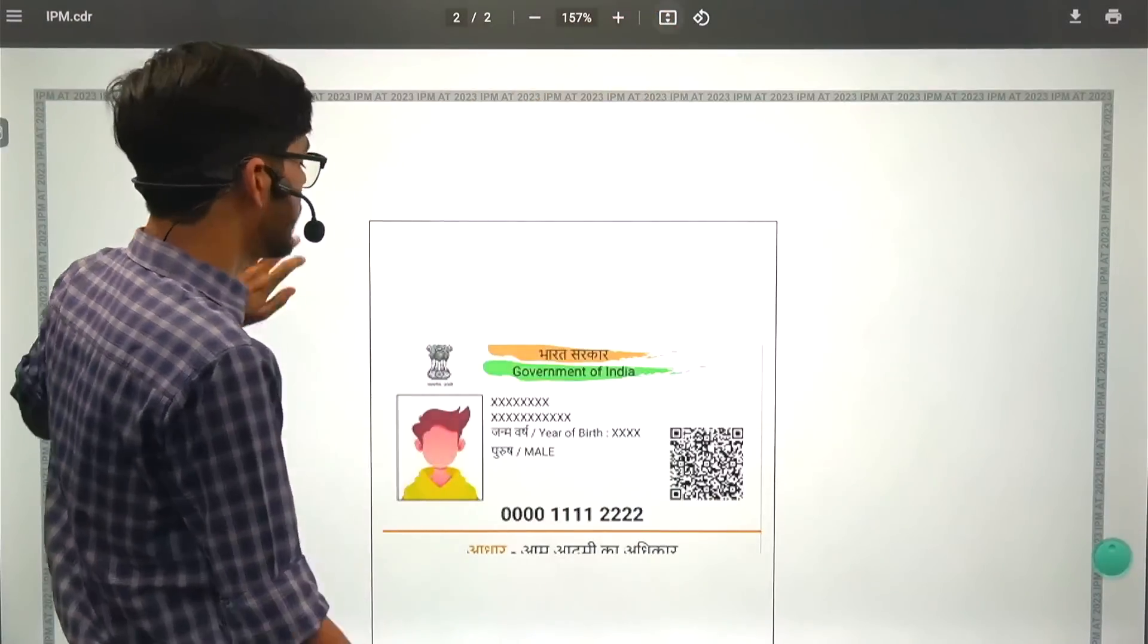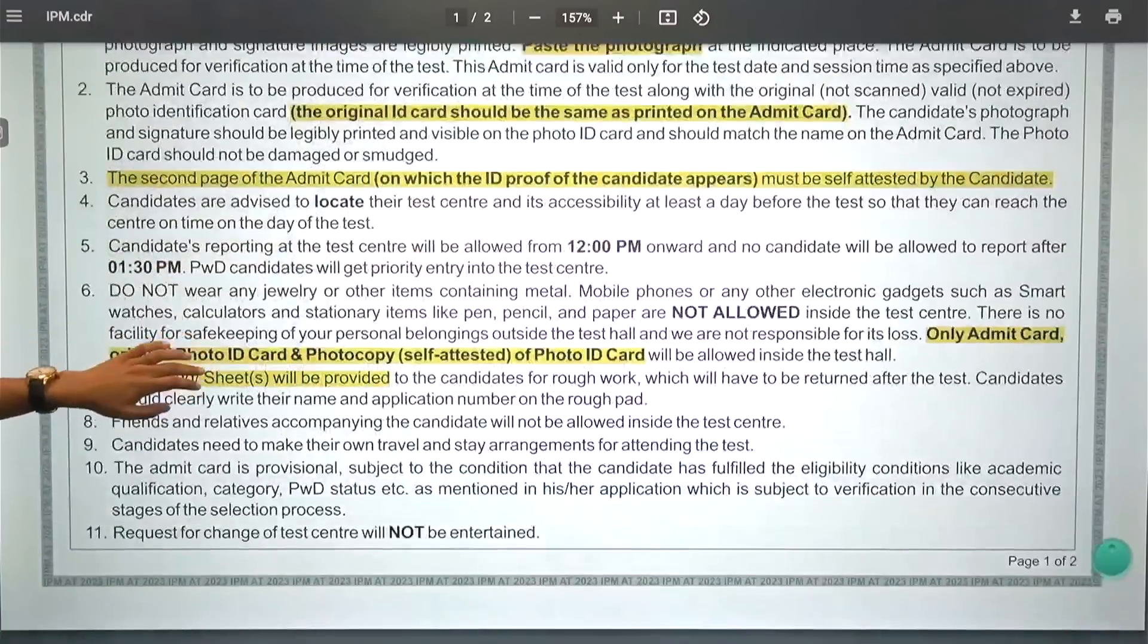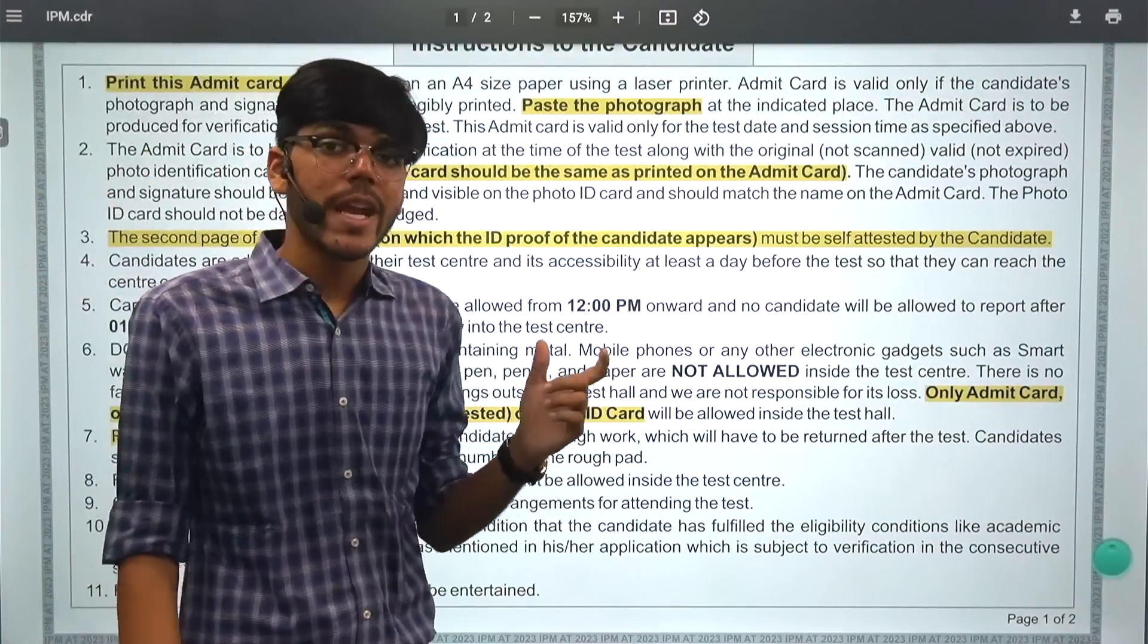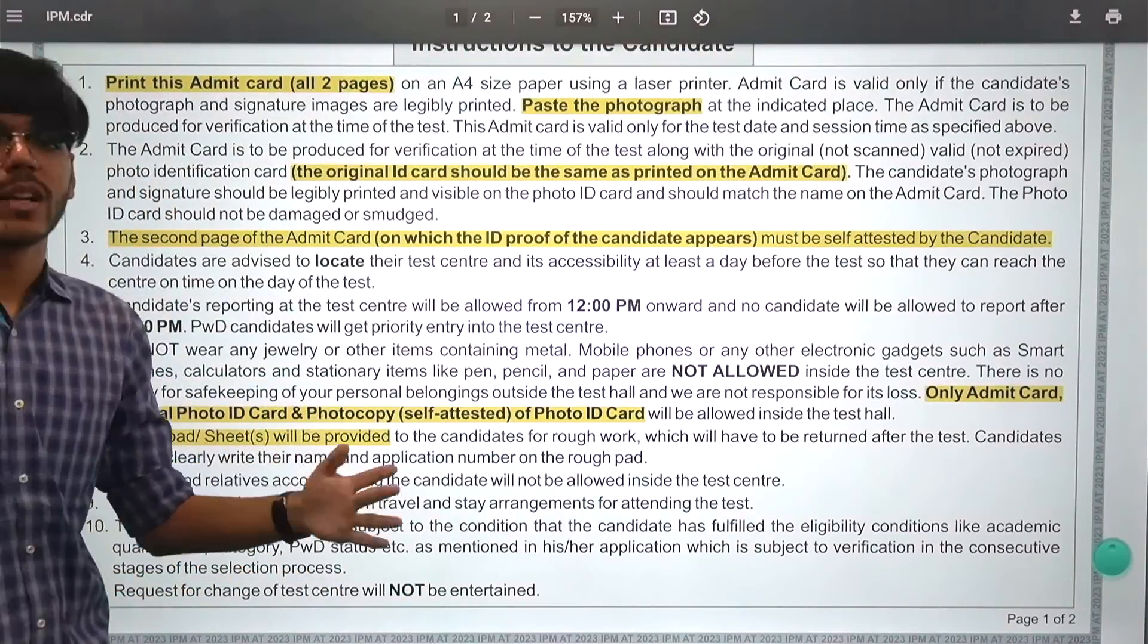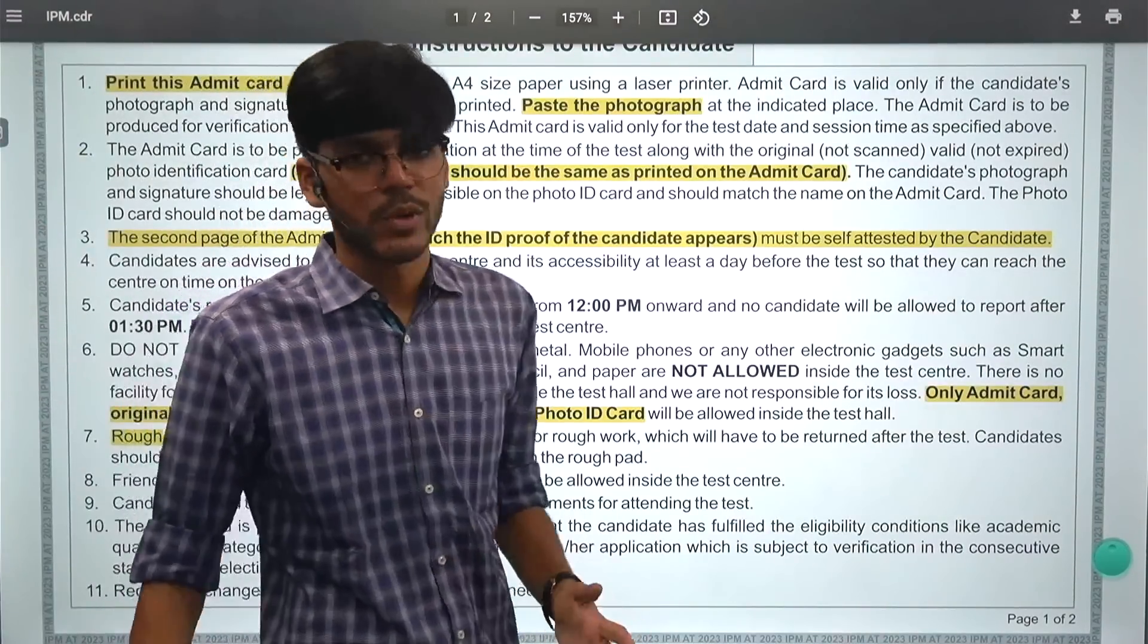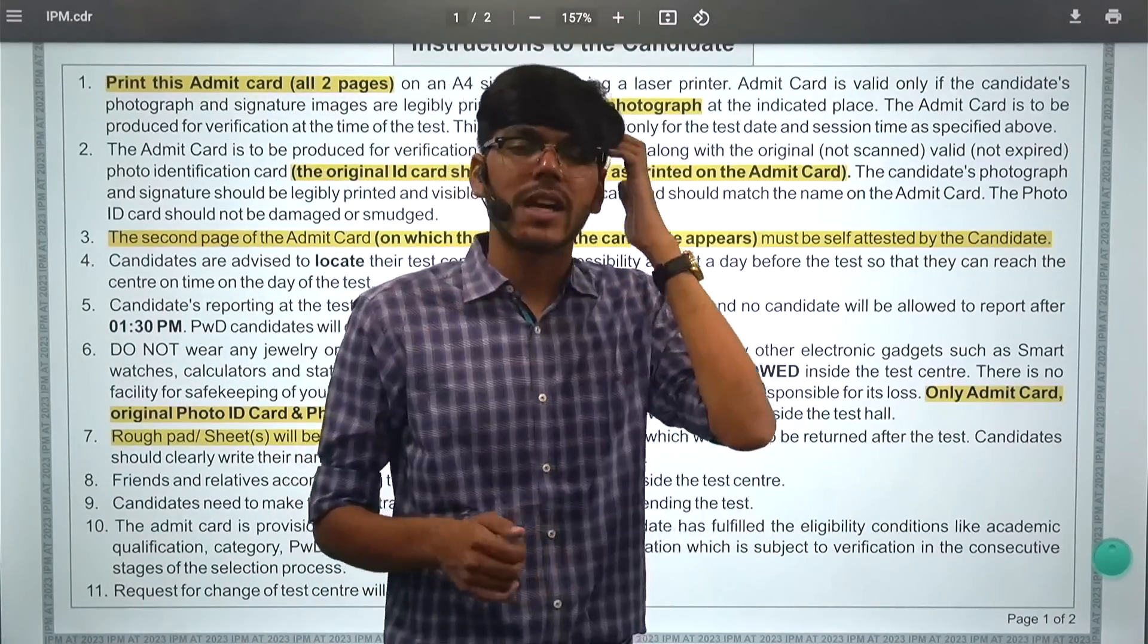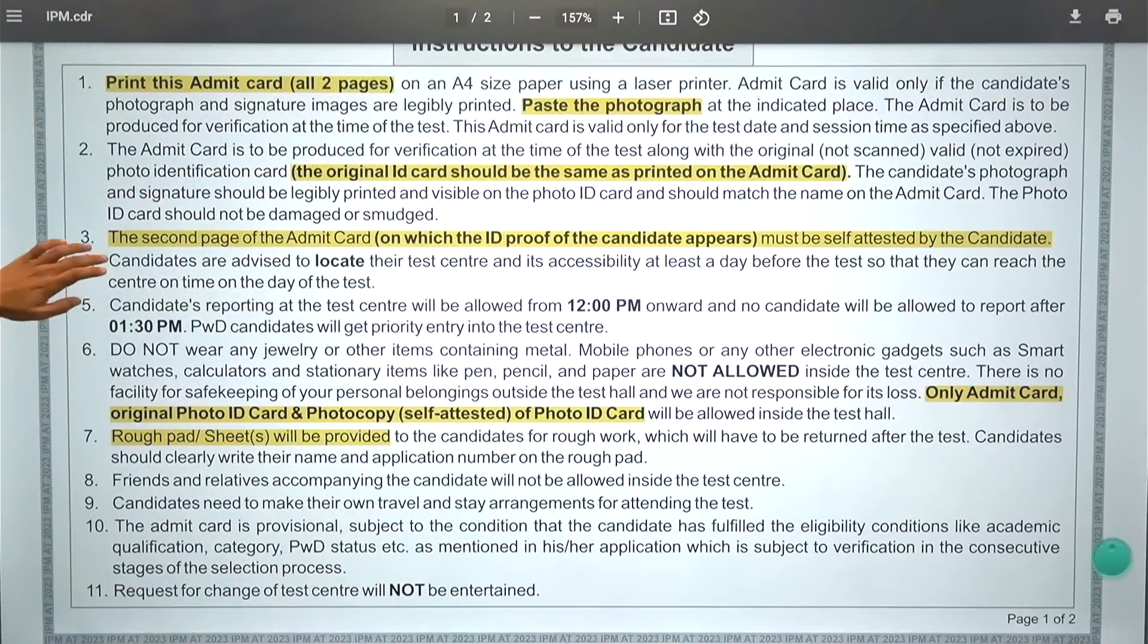So in that case, what you should ideally be doing is that the same ID proof you have uploaded, you need to carry that in the original form. And if the ID proof you have uploaded is not an Aadhaar card, I would suggest that even if you have the ID proof of 10th Marksheet as an ID proof, carry the 10th Marksheet and carry your Aadhaar card as well, both have to be original. So that is what you should be ideally doing in this case.